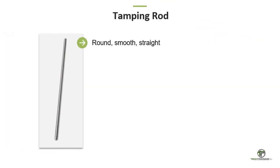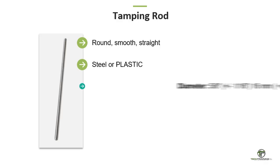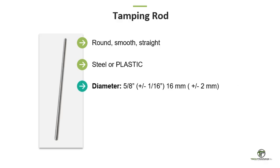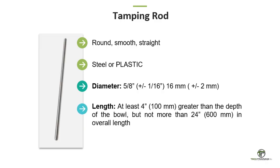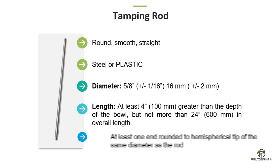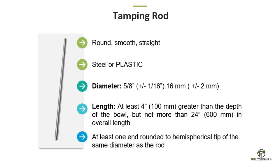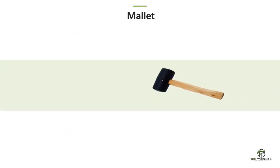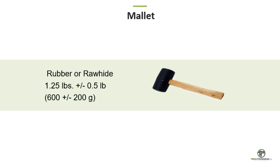A round, smooth, straight steel or high-density polyethylene rod with a diameter of 5/8 inch plus or minus 1/16 inch, or 16 mm plus or minus 2 mm. The length of the tamping rod shall be at least 4 inches or 100 mm greater than the depth of the measuring bowl, but not greater than 24 inches or 600 mm overall. The rod shall have the tamping end or both ends rounded to a hemispherical tip of the same diameter. We also need a mallet with a rubber or rawhide head with a mass of approximately 1.25 pounds plus or minus 0.5 pounds, or 600 grams plus or minus 200 grams.